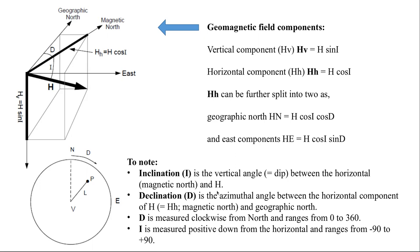I stands for inclination, which is the angle between the horizontal and the magnetic field H. Declination is the azimuthal angle and can be calculated as the angle between geographic north and magnetic north. These values — inclination and declination — are most important in any kind of paleomagnetic studies.